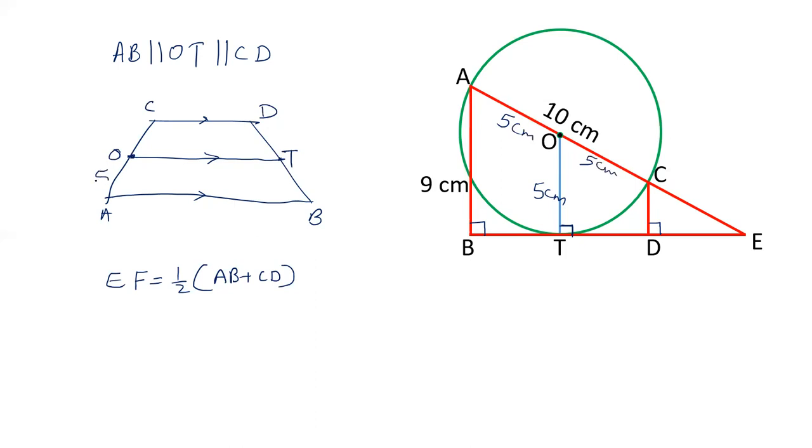So OA is 5, OC is 5. So this is the midpoint. And all the three lines are perpendicular to the same line. So they are parallel to each other.